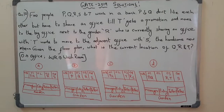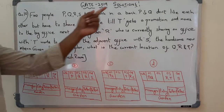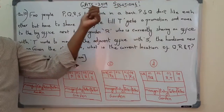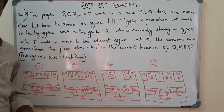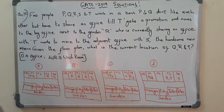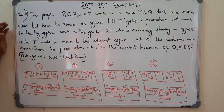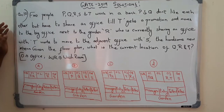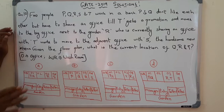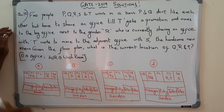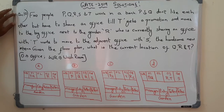Hi everyone. We are discussing the solutions of GATE 2019 Electronics Engineering paper, and this is the last question of quantitative aptitude. After this we have to turn our attention towards the technical questions.